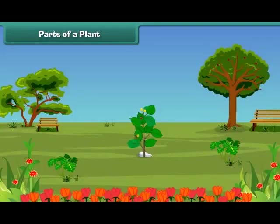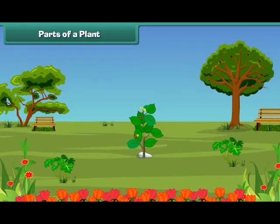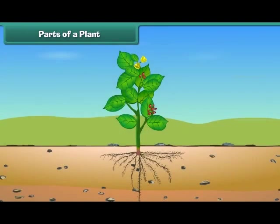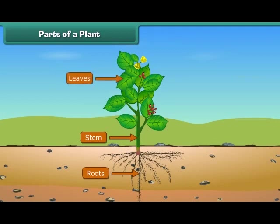Friends, let us discuss various parts of a plant. The main parts of a plant are roots, stem, leaves, flowers, and fruits. Let us know them one by one in more detail.